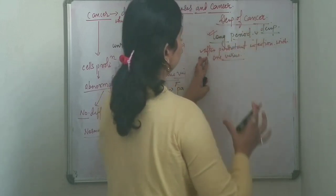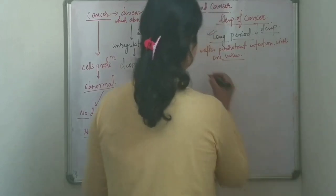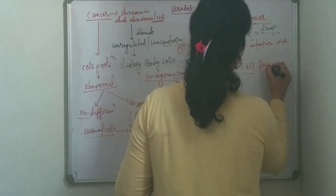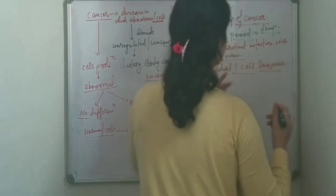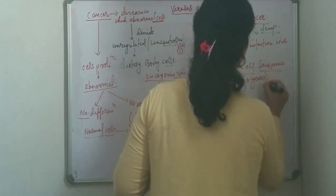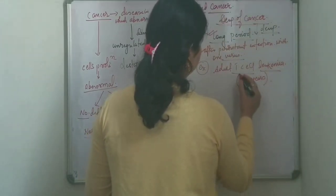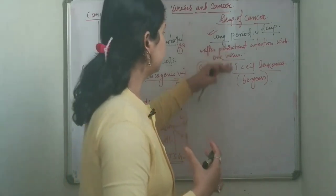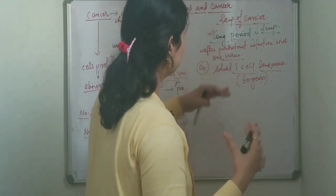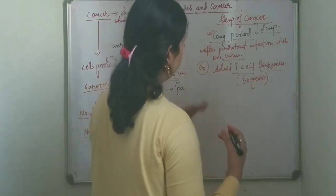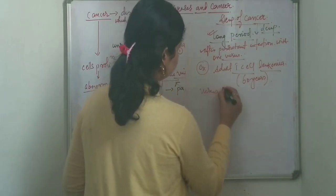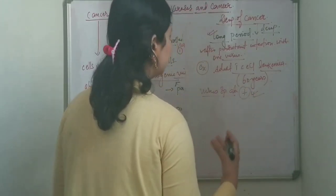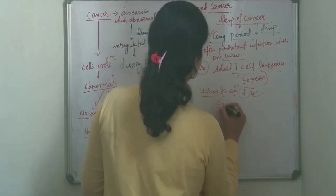It takes a very long time for cancer to develop. For example, adult T-cell leukemia can take approximately 60 years to develop. This is the most surprising thing — even after the host's immune response, it remains in the body for a long duration. In the context of latent infections, if a virus is in the body, specific antibodies are present, and the virus can remain in the body for a long time. For example, Epstein-Barr virus can remain latent.